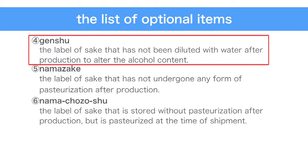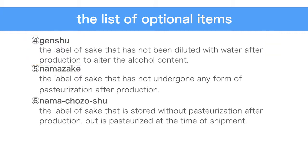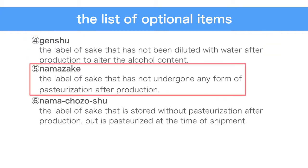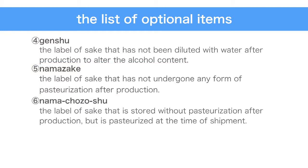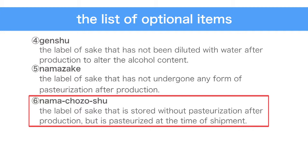The term genshu may be indicated on the label of sake that has not been diluted with water after production to alter the alcohol content. The term namazake may be indicated on the label of sake that has not undergone any form of pasteurization after production. The term namachozo-shu may be indicated on the label of sake that is stored without pasteurization after production but is pasteurized at the time of shipment.